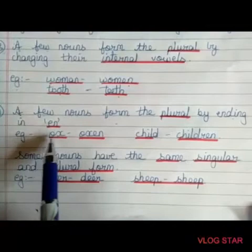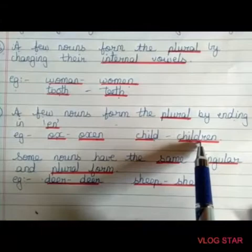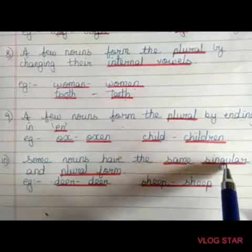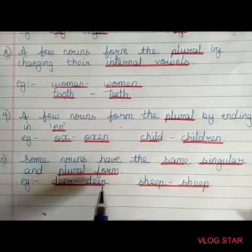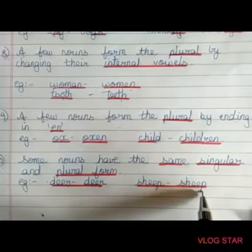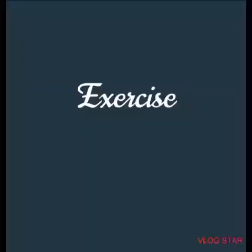The last rule: some nouns have the same singular and plural form. For example, deer remains deer — we cannot say deers. Sheep remains sheep. Students, please revise the table given below and solve the following exercise.